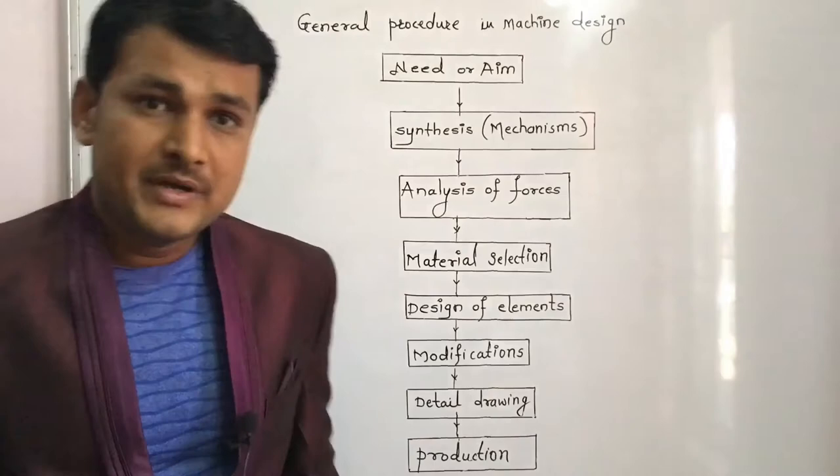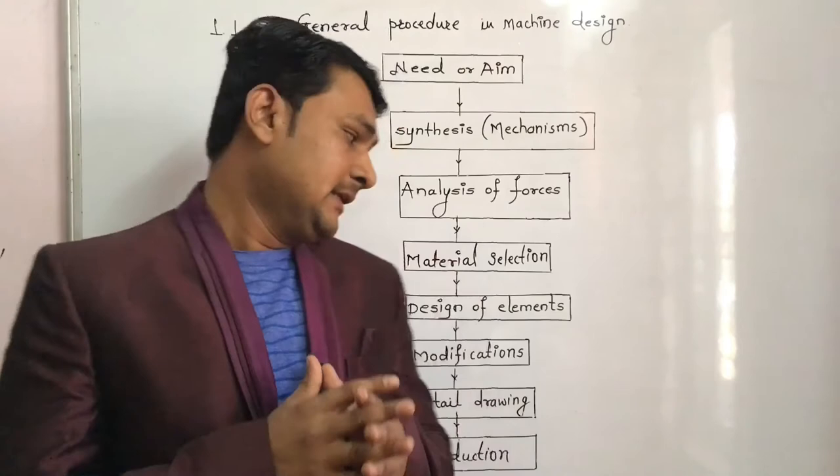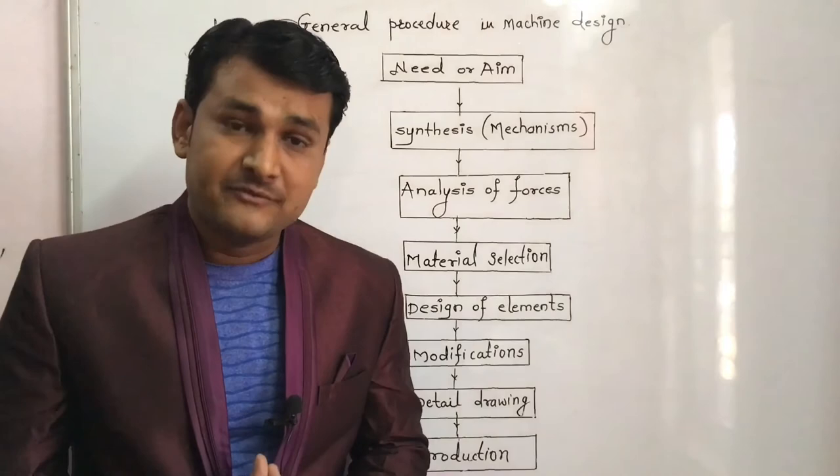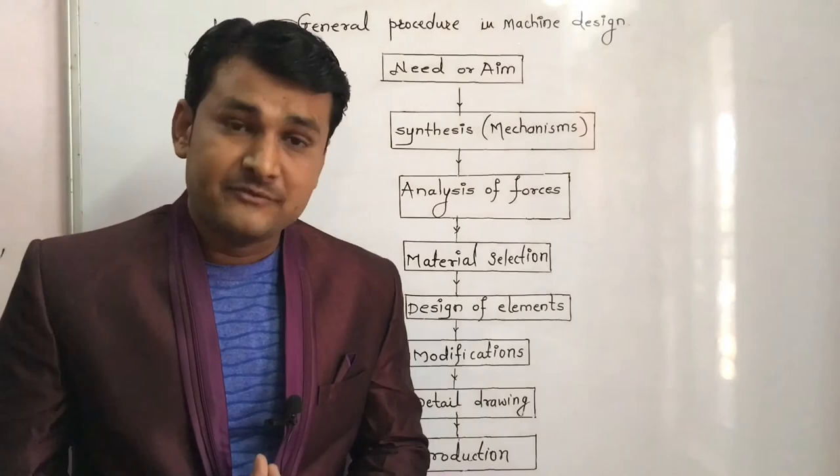After that, once the prototype model is prepared, tested, and if it works satisfactorily, then the detail drawing will be issued to the production department for manufacturing. In this way, this is the total flowchart for the general procedure in machine design.